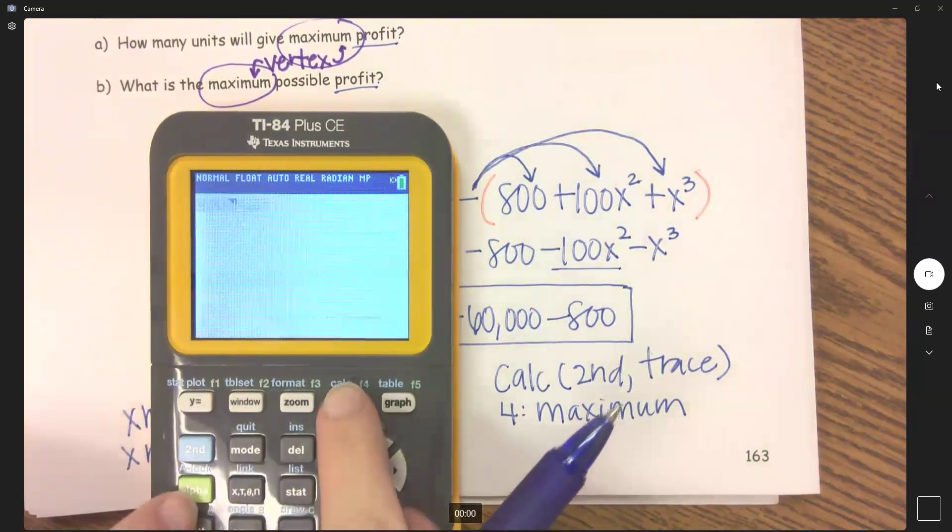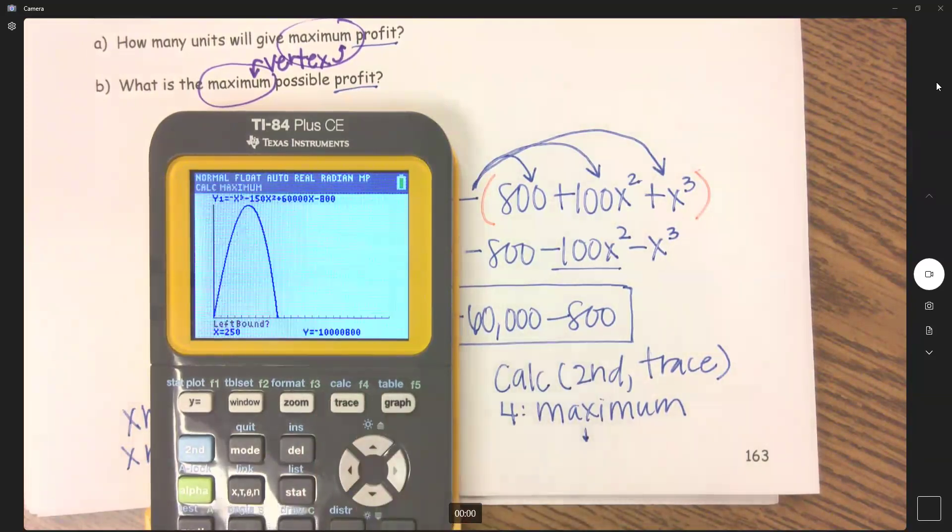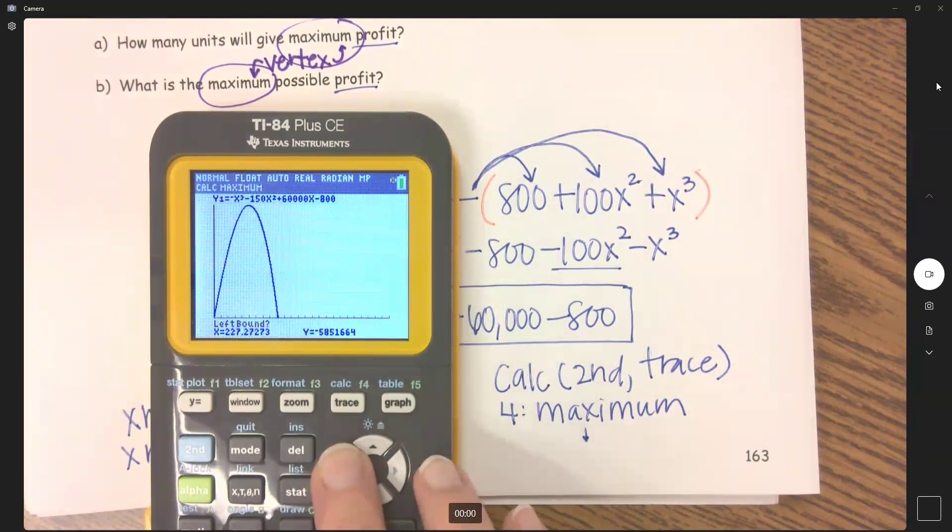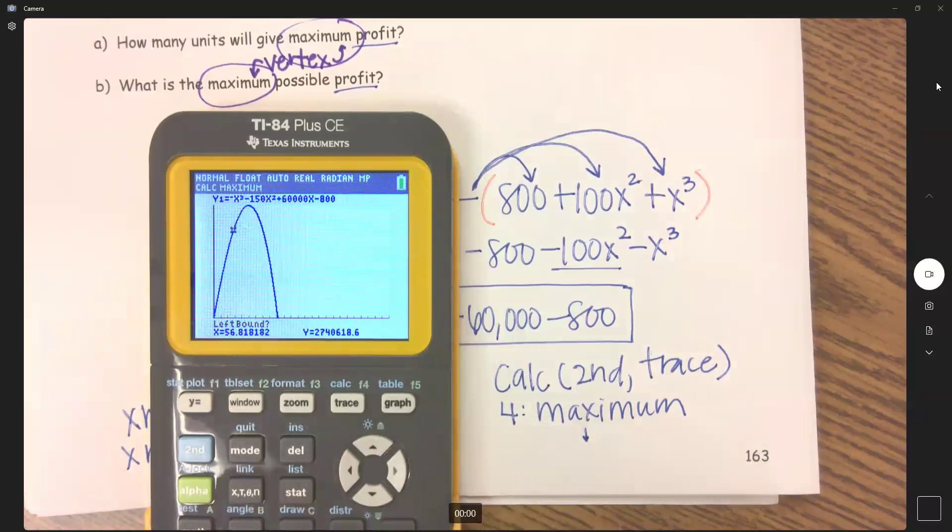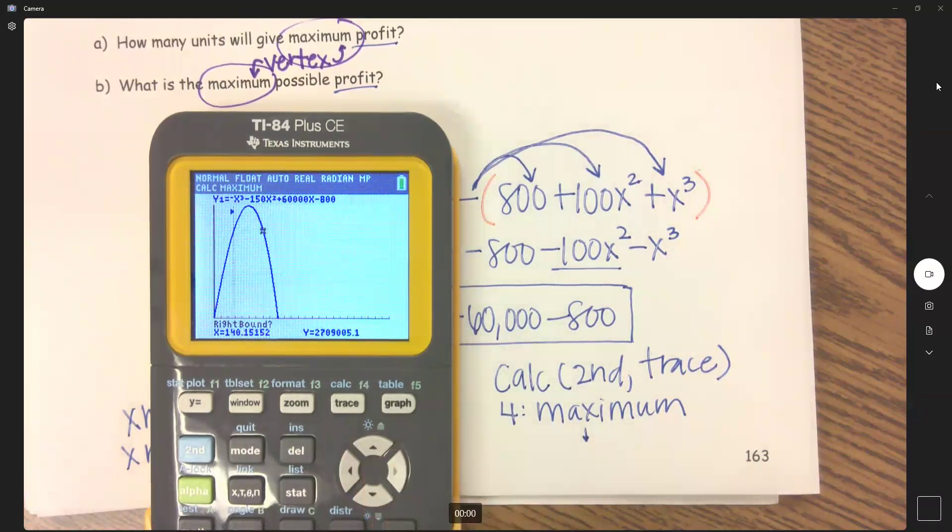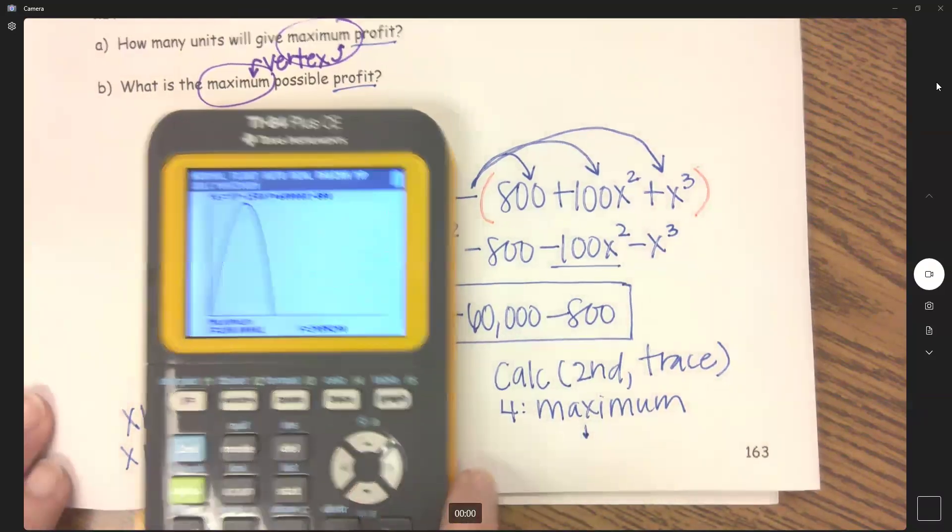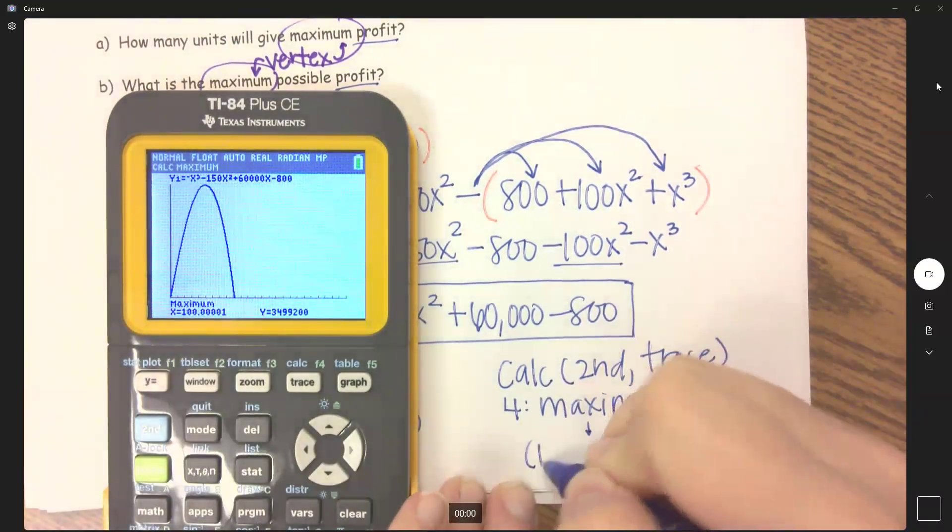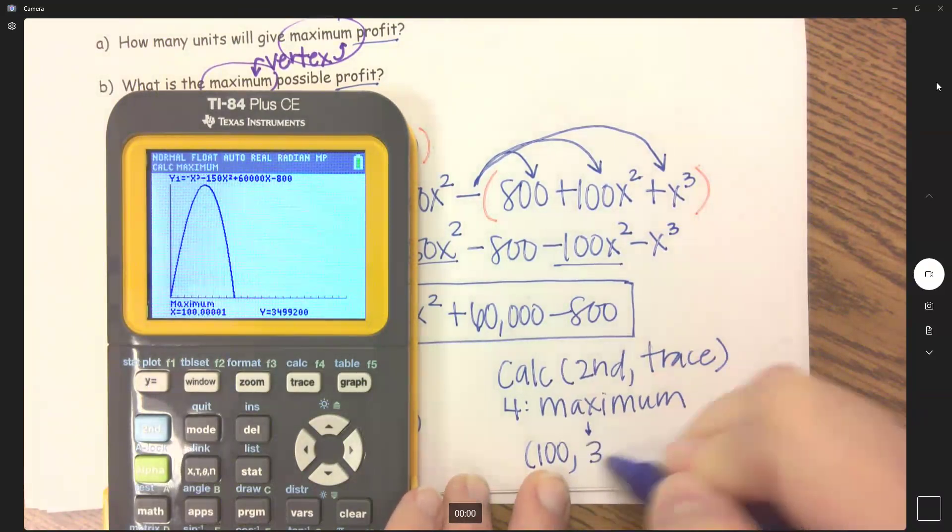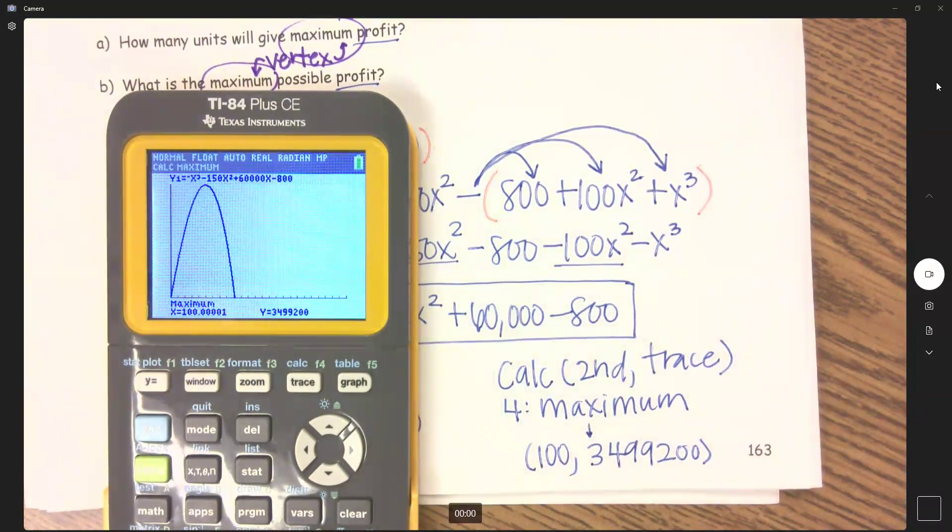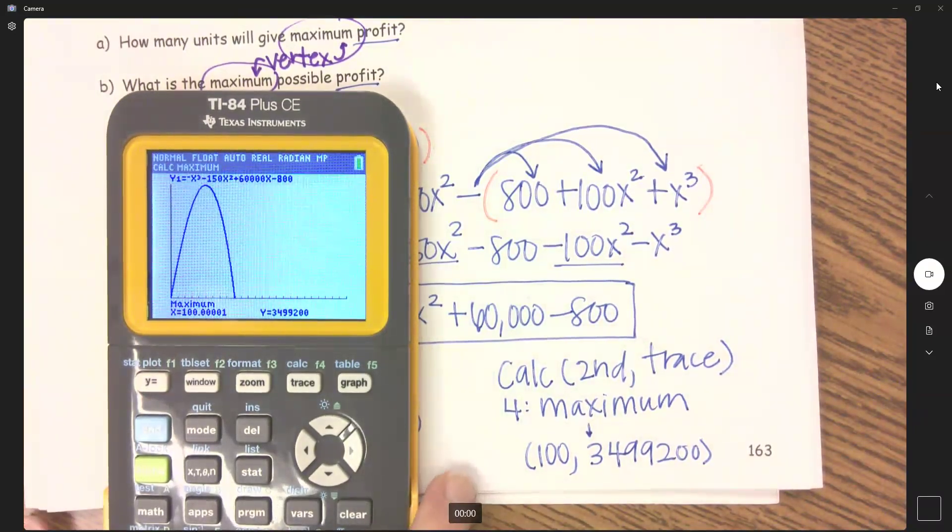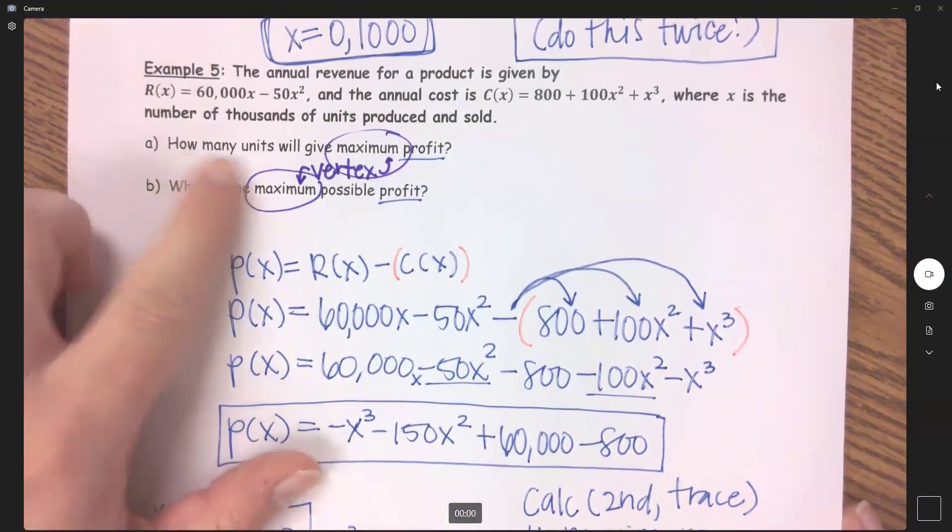I don't think we've done this since almost module one, lesson two. Let's find what my maximum point is here. So second trace, it's a max. So I want the maximum. I'm going to have left bound and right bound. So my max is somewhere right here. I want to go to the left of that max, hit enter. Now I need to go to the right, and enter through guess. I'm going to call that 100, 3499200.